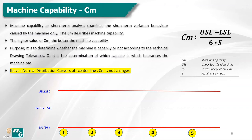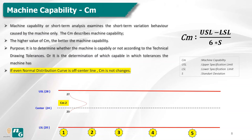Looking at the image for better understanding: in the first sample, the CM is 2 because the formula gives (USL − LSL) / (6σ) = (28 − 20) / (27 − 23) = 2. In the second sample, the specification limits are still 28 minus 20, which equals 8, divided by (25 − 21), so machine capability is again 2 — the same as the first sample.